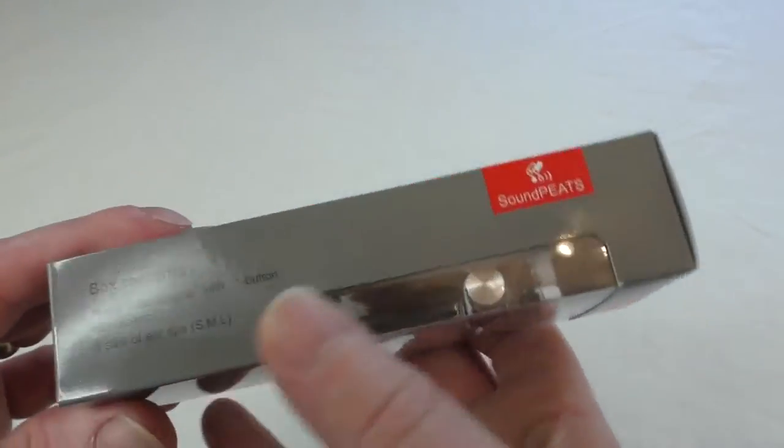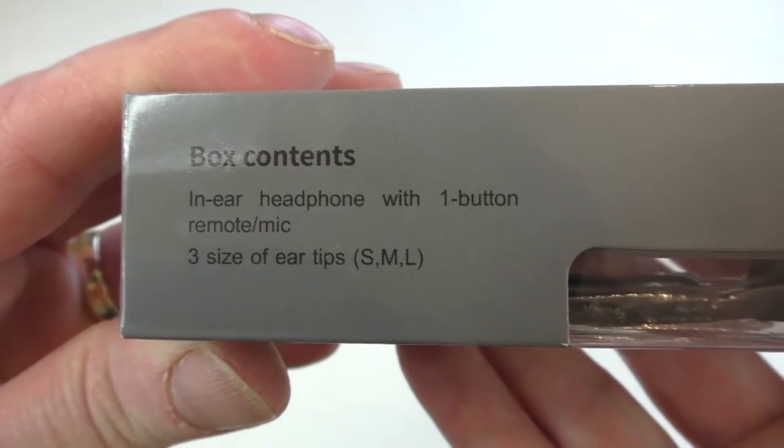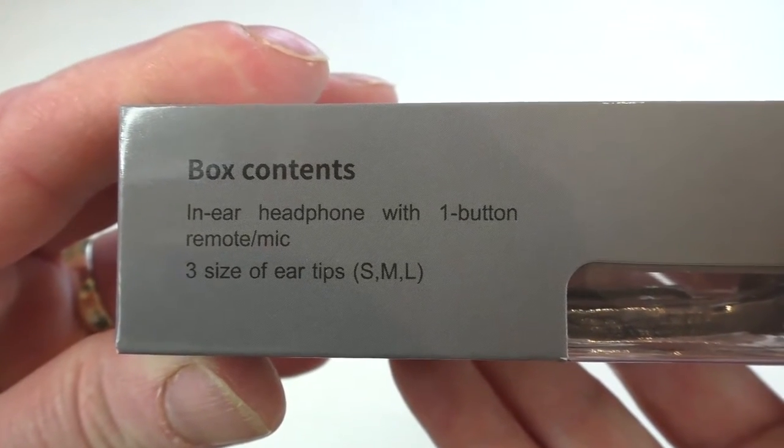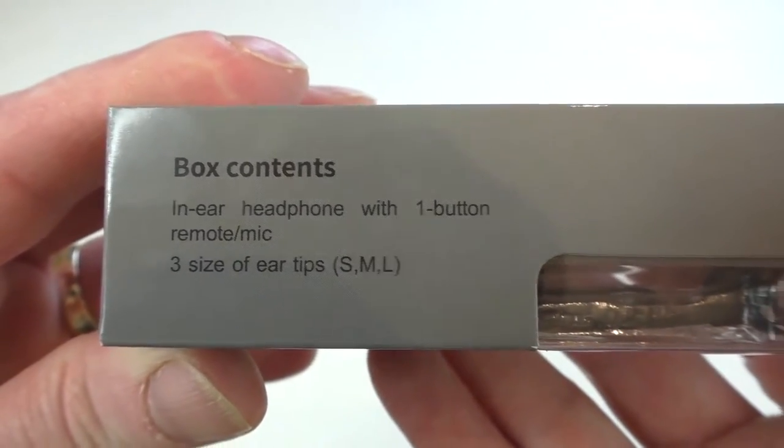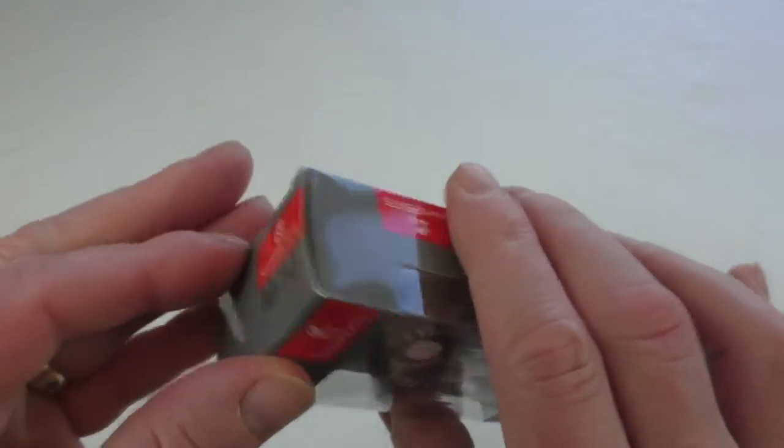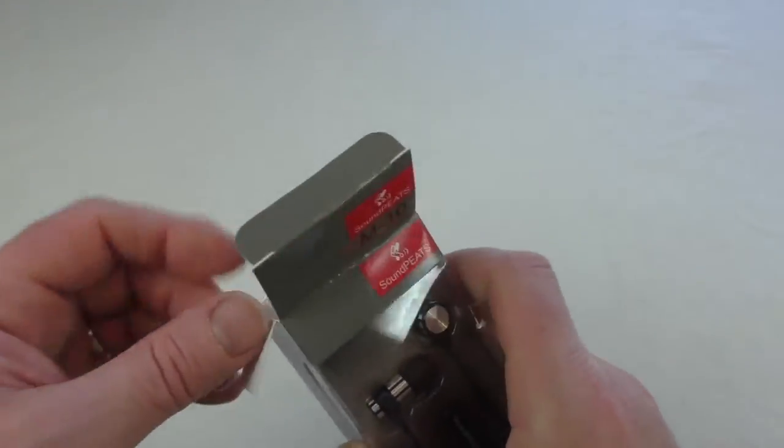Let's have a look at the box contents: in-ear headphone with one button remote mic. So you've got your microphone built into there and you've got three sizes of ear tips as well. Let's get in and have a look. I've already cut the seal but I haven't actually had them out yet.